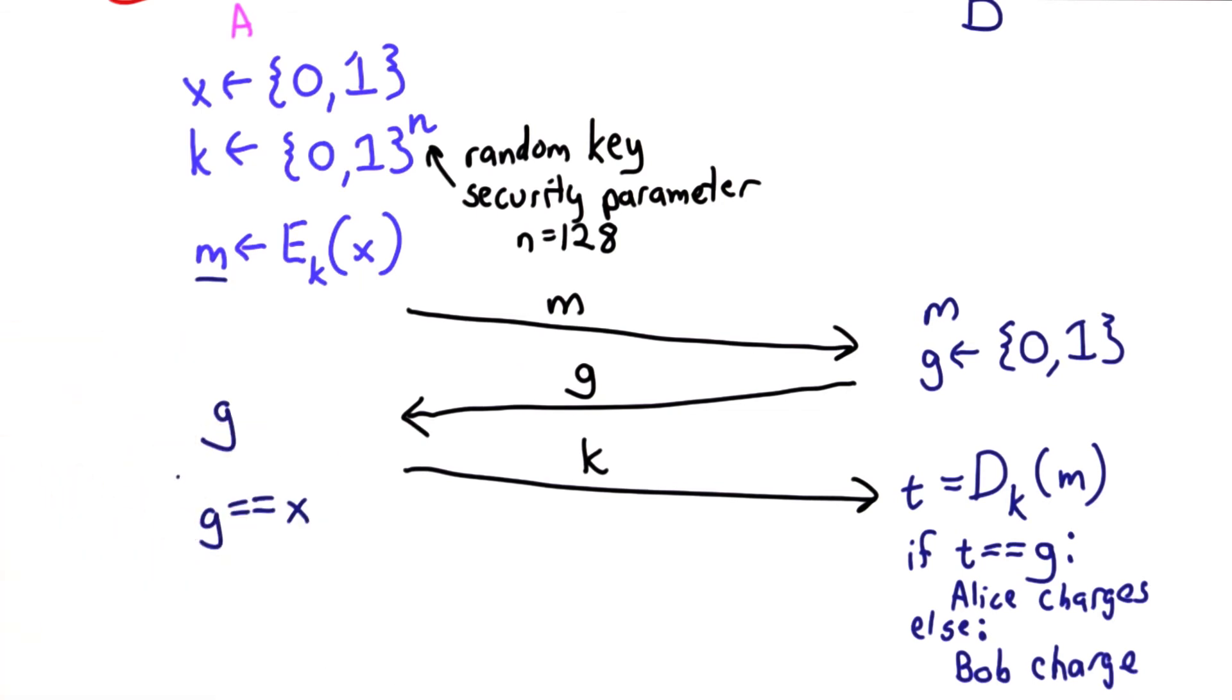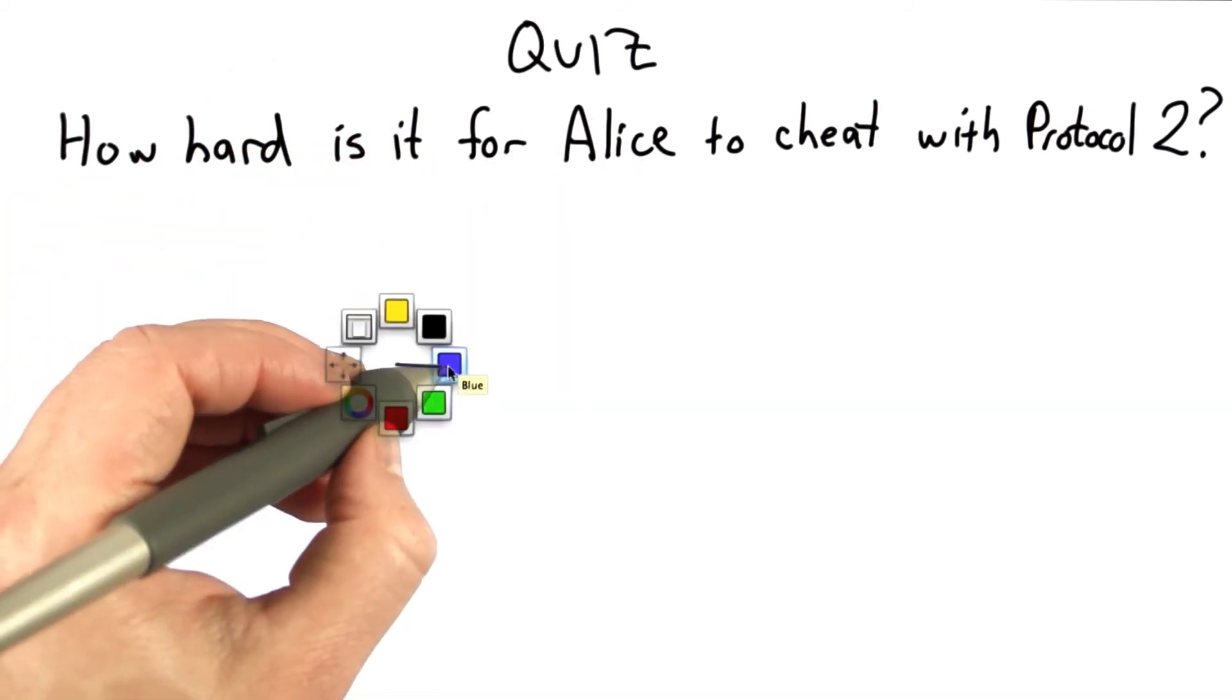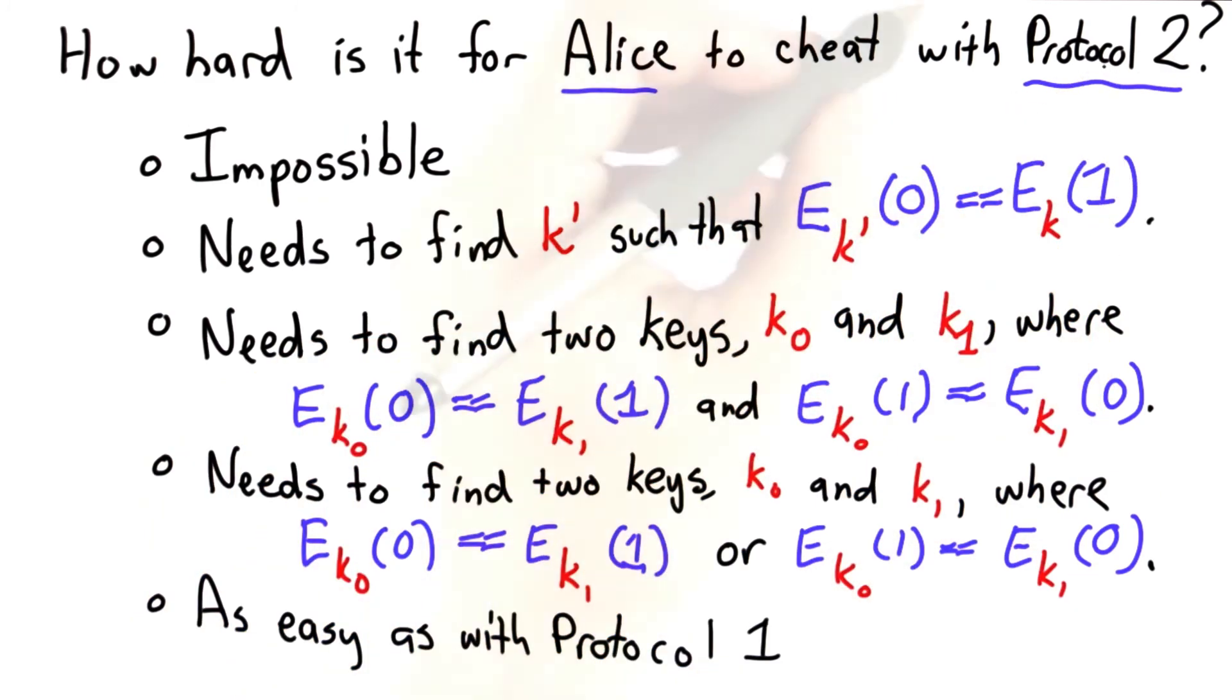Now the question is, is this fair? How hard is it for Alice to cheat using robo-dog Protocol 2? By cheat here, we mean gain an advantage, be able to make the coin toss unfair in her favor. Here are the choices. There's only one correct answer. It's the easiest thing for Alice to do that would be enough to make the coin toss unfair for Bob.